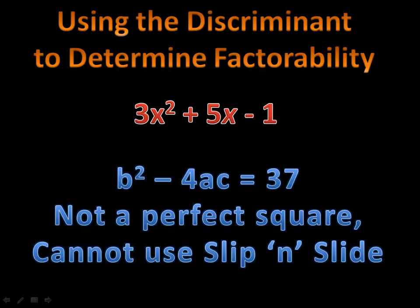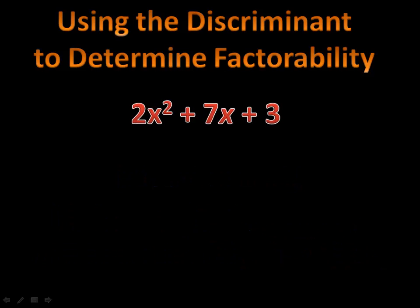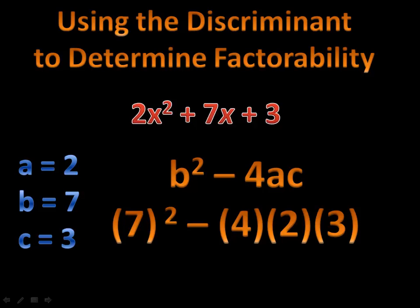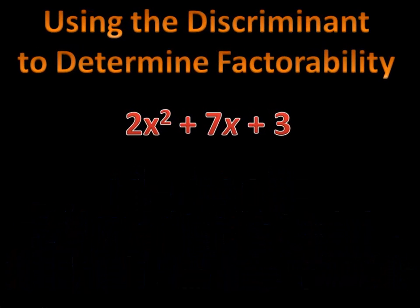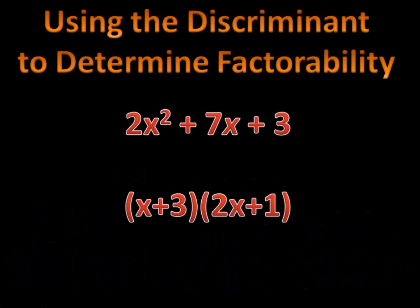How about if we have a different one — 2x squared plus 7x plus 3. Once again, we identify a, b, and c, and we plug those into the formula b squared minus 4ac. Put that into the calculator, and I end up with 25. 25 is a positive perfect square, therefore you can use slip and slide to factor this. In fact, my factors will be x plus 3 and 2x plus 1, once you finish using slip and slide.